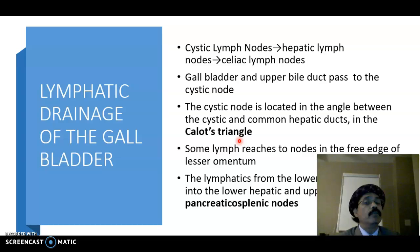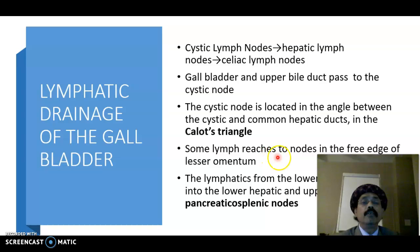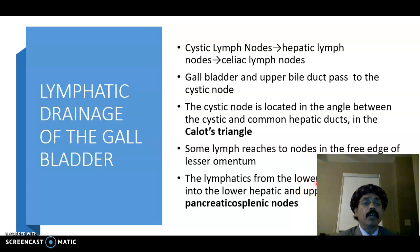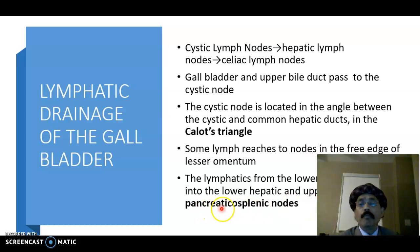I have a video on Calot's triangle and I request everyone to watch that YouTube video. Some lymph also reaches nodes in the free edge of the lesser omentum, which is located along the lesser curvature of the stomach. The lymphatics from the lower bile duct open into the lower hepatic and upper pancreaticoduodenal lymph nodes.